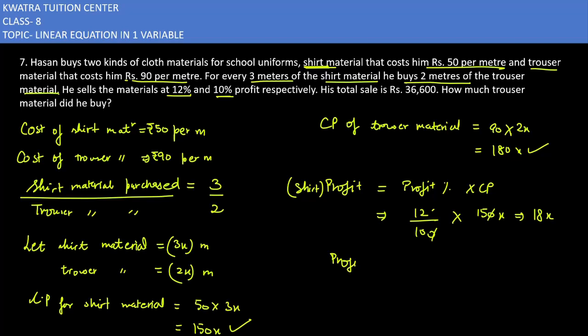Next, profit on trouser is profit percent into CP. Profit percent is 10%, so 10 over 100 into CP which is 180x. Canceling the zeros, we get 18x as the profit on trouser.